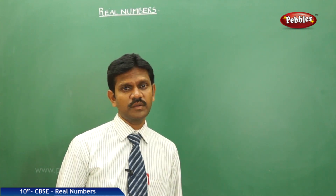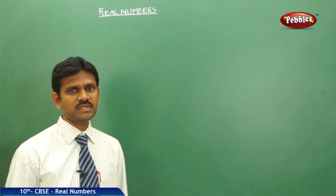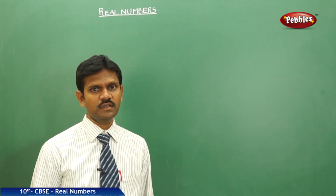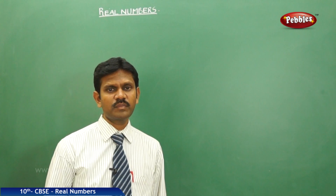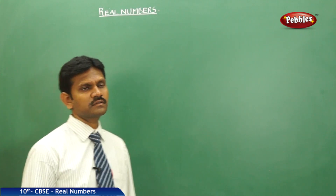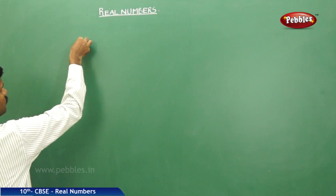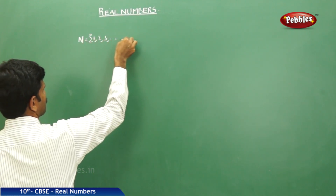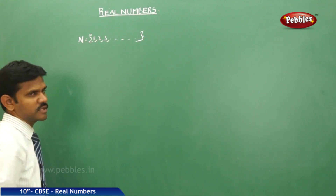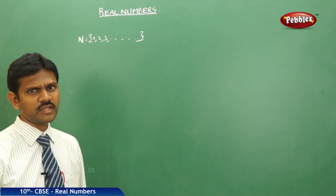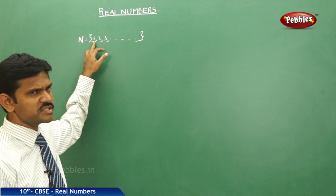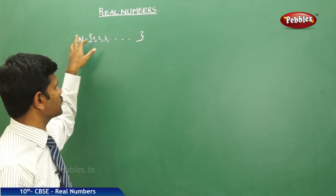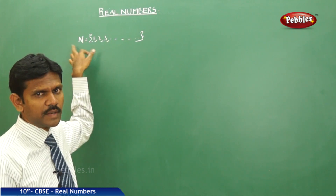All of you know very well about the natural numbers. Natural numbers are the numbers which we generally use for counting. The least number of the natural numbers is 1 and the highest number cannot be defined. That is, N equals the set of {1, 2, 3, and so on}. The set of natural numbers is denoted with capital N.